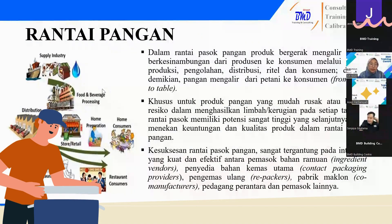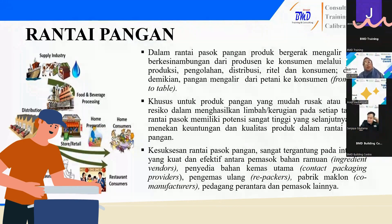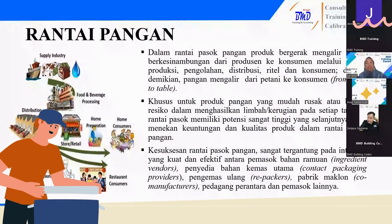Dari tempat produksi tadi langsung ke tempat distribusi atau pendistribusian. Kalau misalkan produk bahan makanan kemasan, biasanya ke retail, ke toko. Kalau sebelum ke toko biasanya ke distribution store besar dulu. Kalau catering, berarti supply-nya ke perusahaan-perusahaan gitu ya Pak? Betul. Biasanya kita lebih banyak ke perusahaannya langsung. Kalau sekarang juga mulai banyak UMKM-UMKM untuk catering perorangan, catering diet. Untuk ini lebih ke instansi ya.